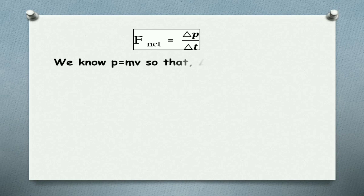F net equals delta P by delta T. We know P equals mv, momentum equals mass into velocity. Substituting that in P.